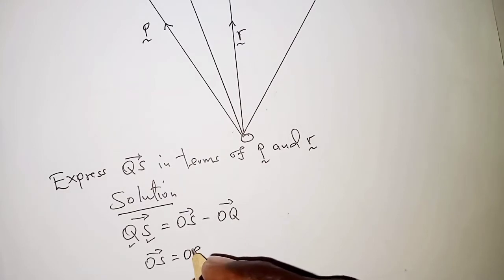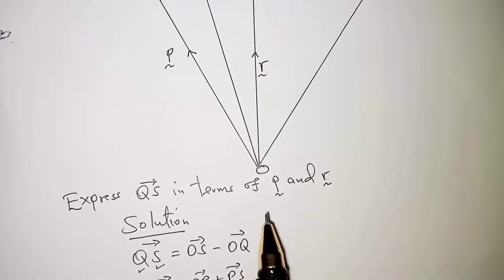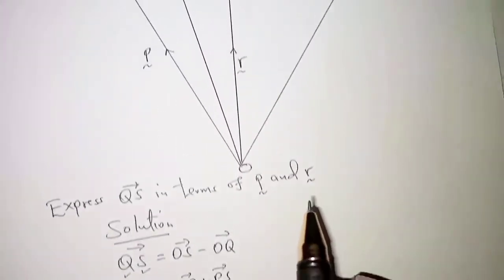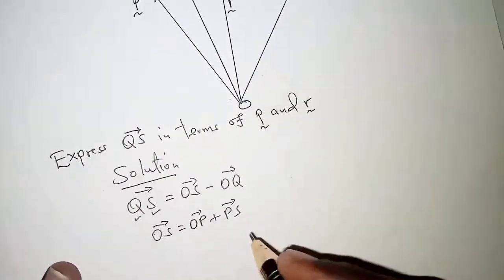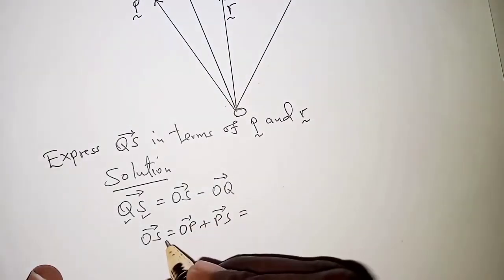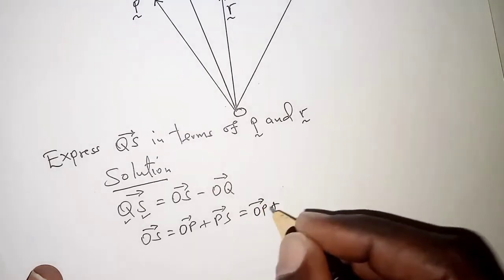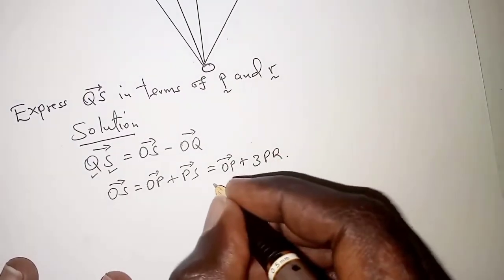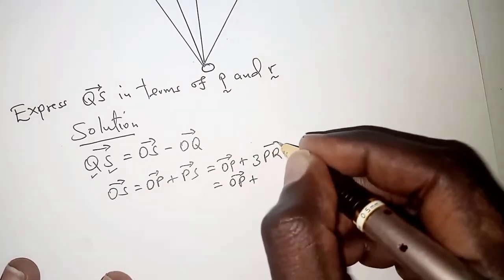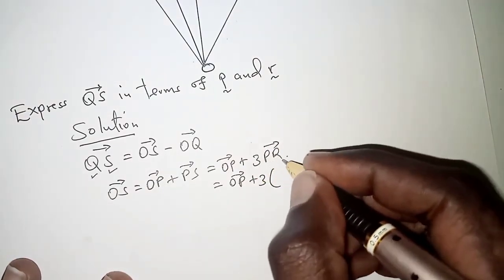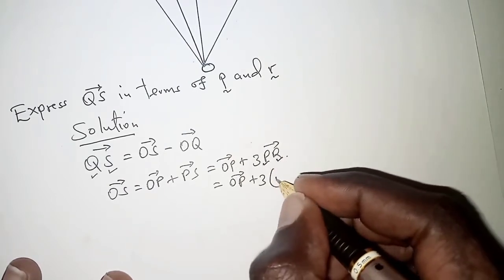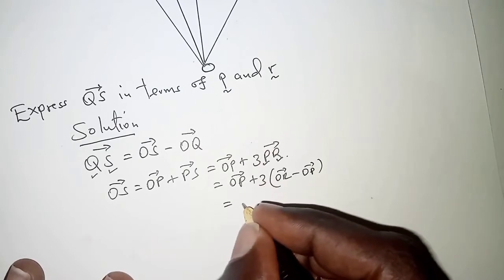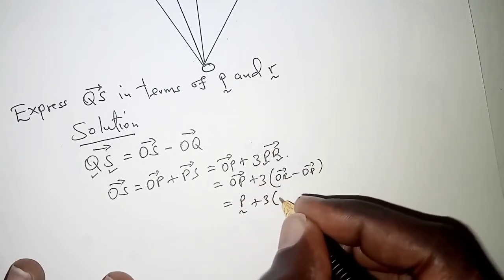So OS equals OP plus PS. We already have OP directly. For PS, the question tells us PS is three times PR, so OS equals OP plus 3PR. Now PR is the position vector of R minus that of P, which is OR minus OP. So we have vector p plus 3 times (r minus p).